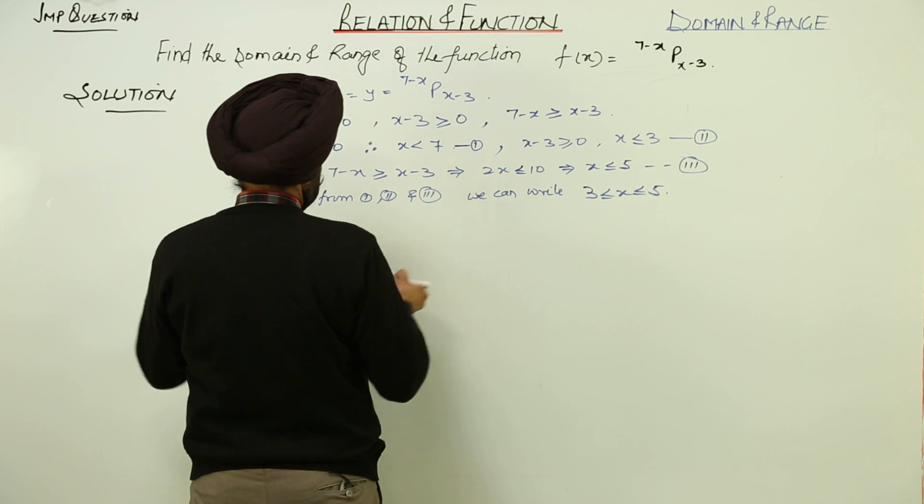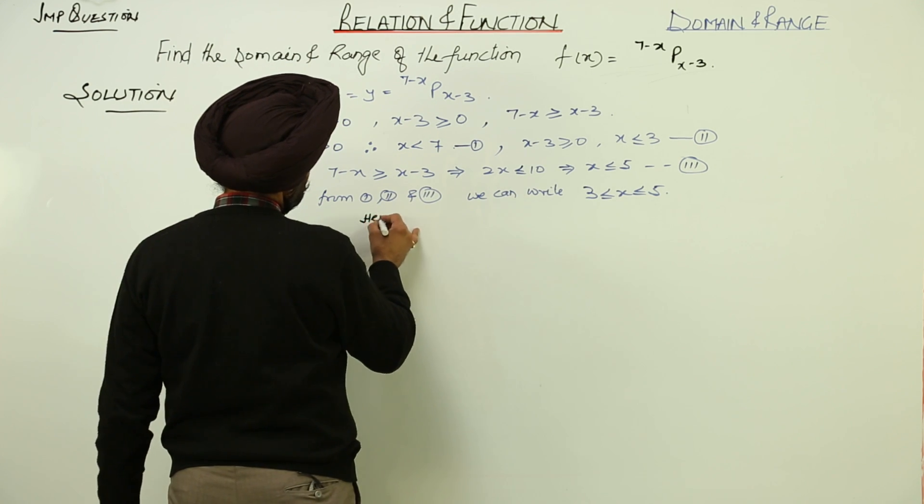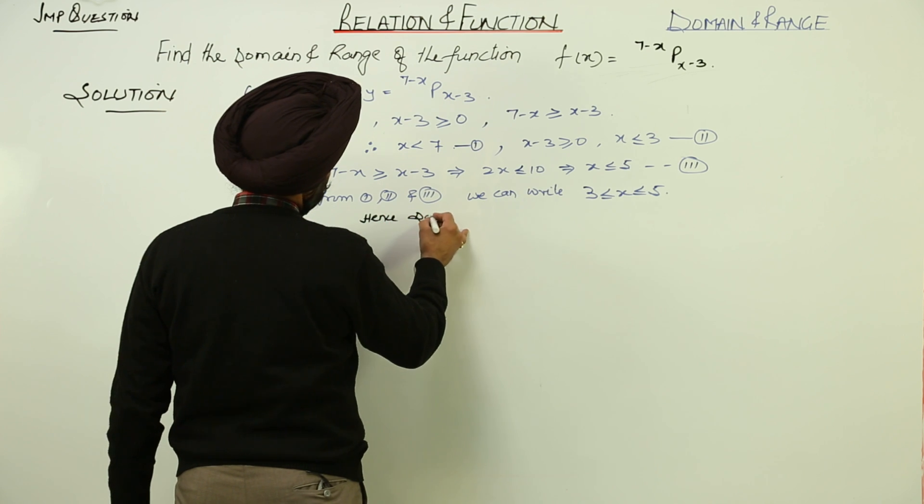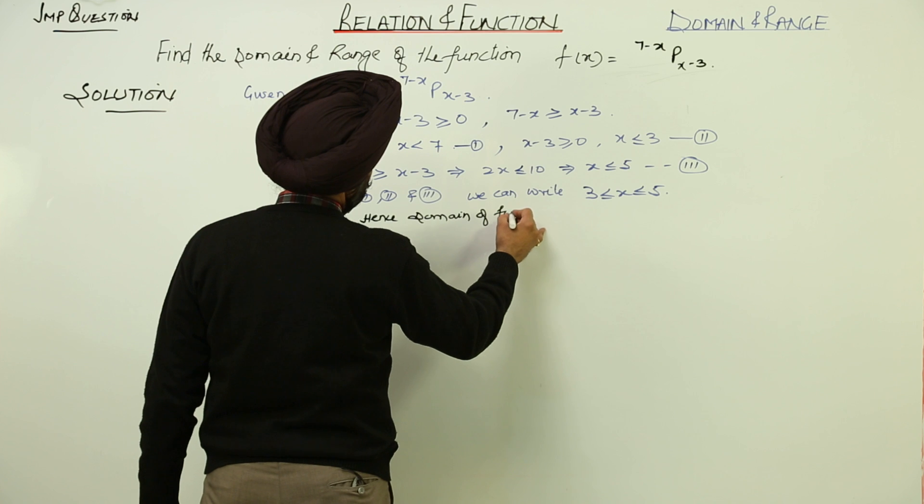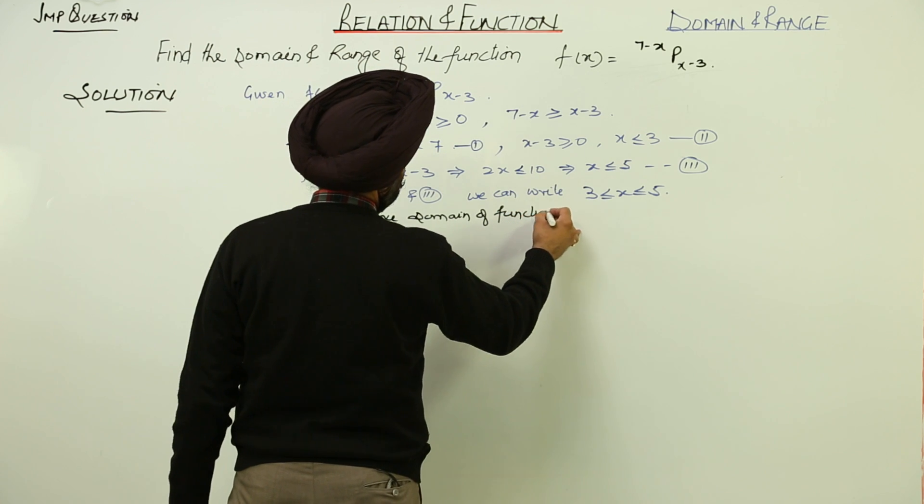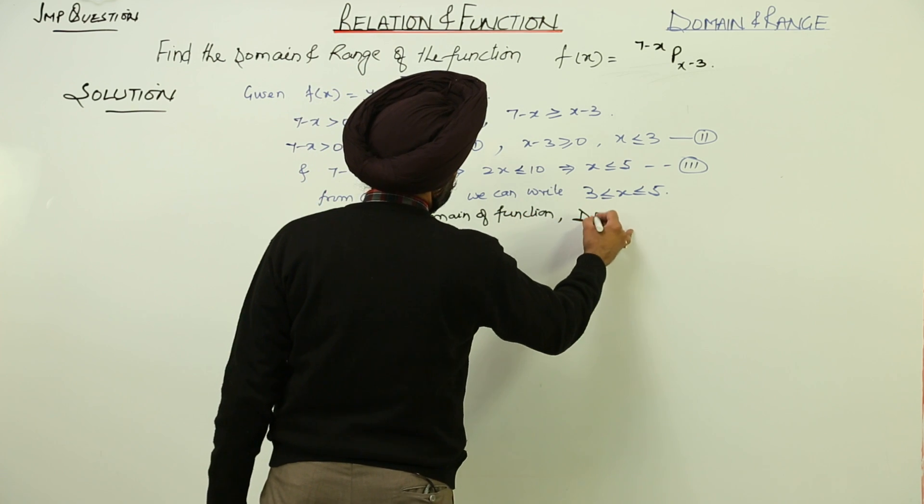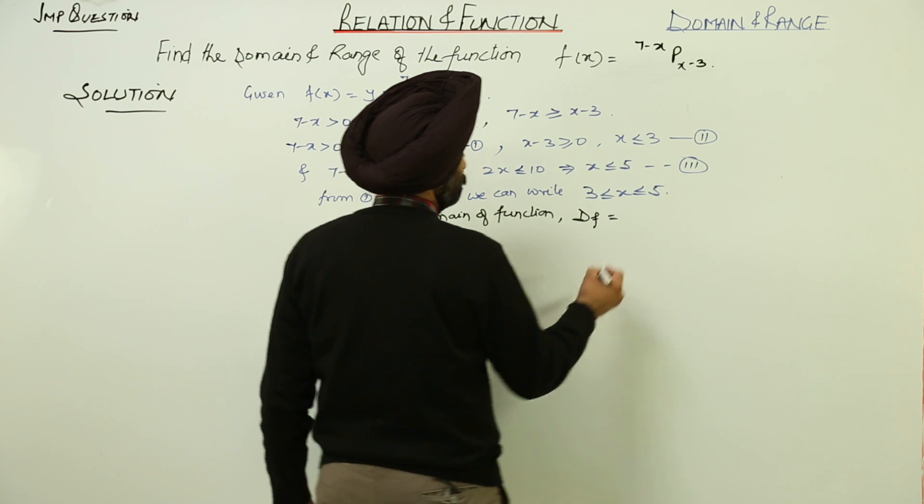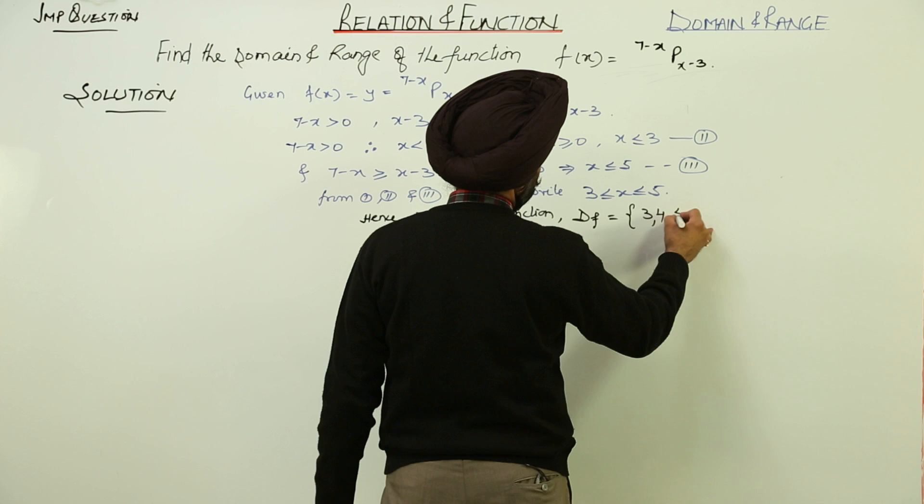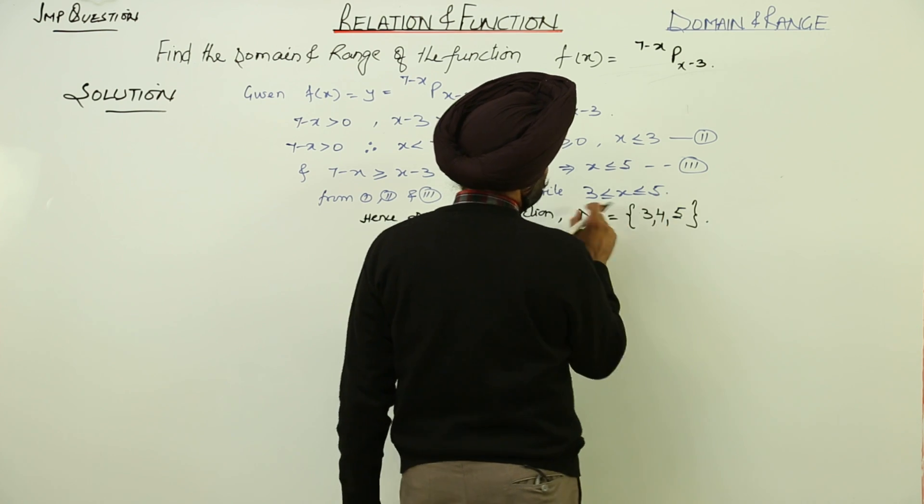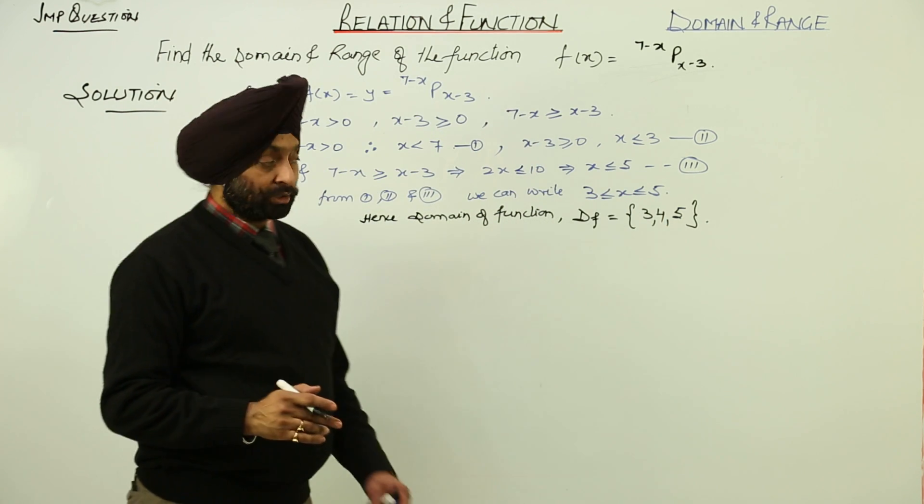Hence, domain of function is equal to 3, 4, 5. 3 is less than or equal to x is less than or equal to 5.